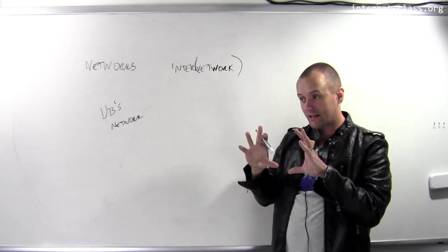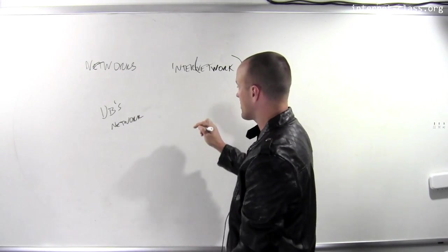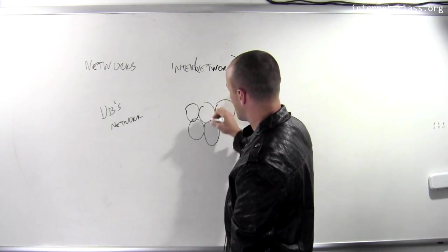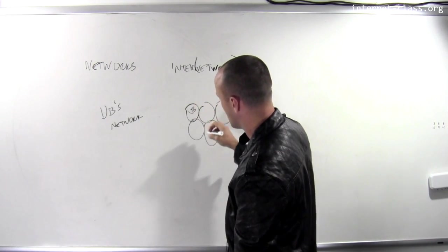It is connected to other networks that are administered by other entities, and those networks connected together form the broader internet. The internet consists of all these computer networks.